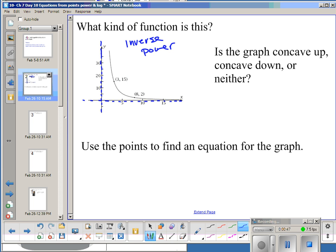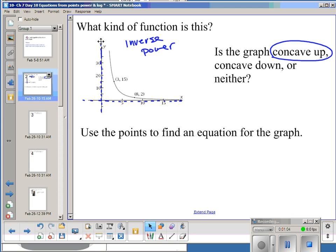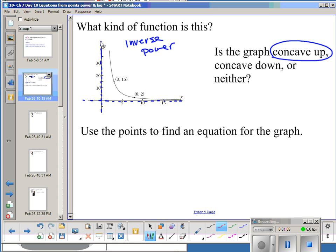Exponential has just the one horizontal asymptote. Logarithmic has the one vertical asymptote. Inverse power has the double set. And we'll learn later that could also be a rational function. Is this graph concave up, concave down, or neither? It opens, the curve faces up, so this is concave up. And this is a concept that will become more important later on when you're taking calculus. So our last part, the meat of this whole lesson, is use the points to find an equation for the graph. So first we have to start with what is the generic version of a power model. And so we have y equals A times x to the B. So our job is to find the particular A and B that work for these two points.